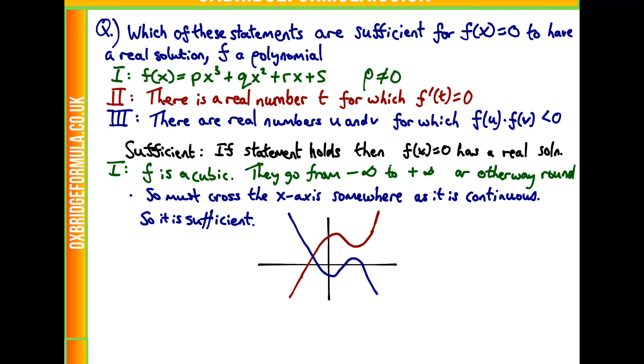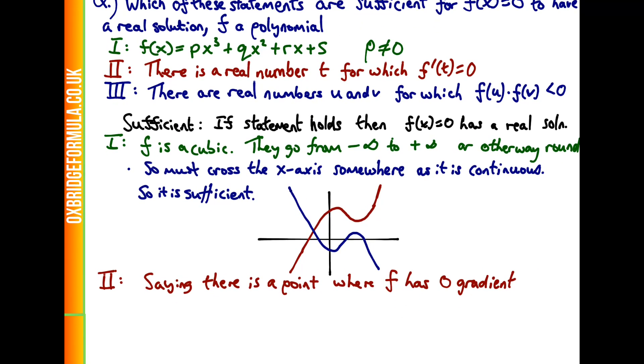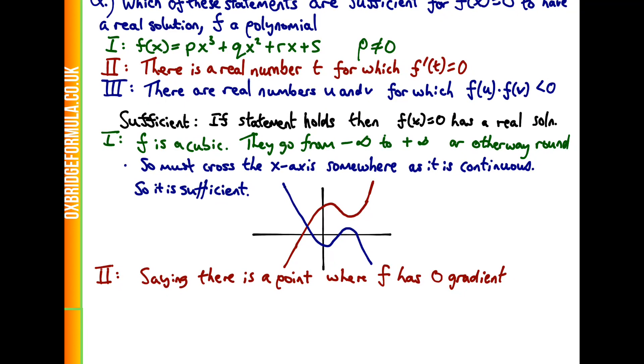What about the second statement? That's precisely saying if there's a real number t for which f'(t) is 0, it means there's a point where the graph of f has 0 gradient. Do you think this is sufficient? Well, no, because you can find an easy counterexample for this.